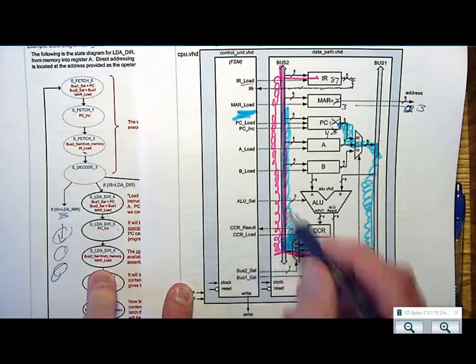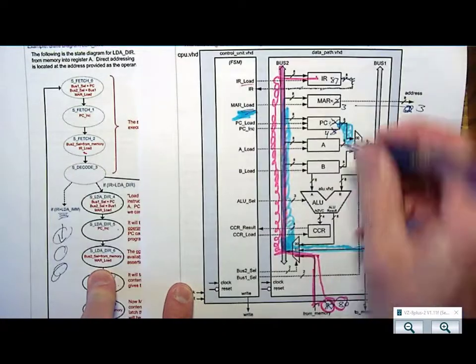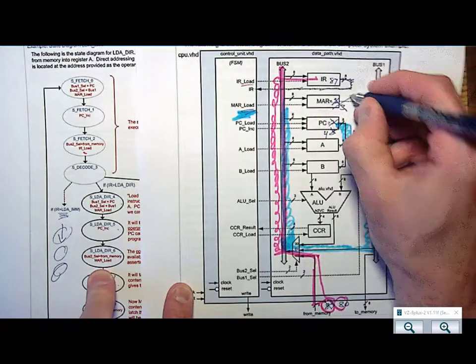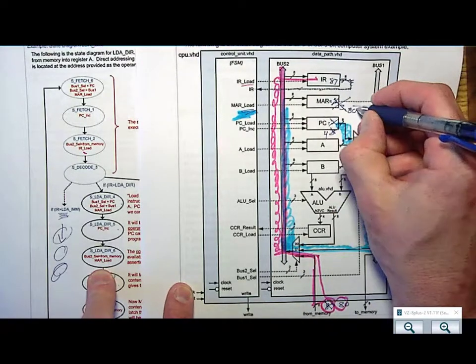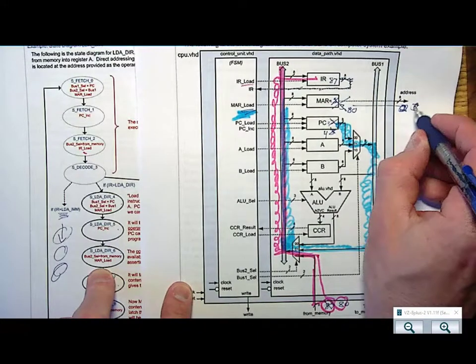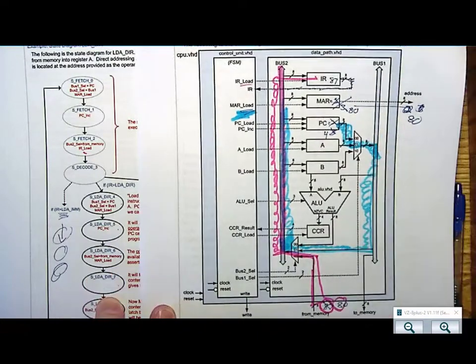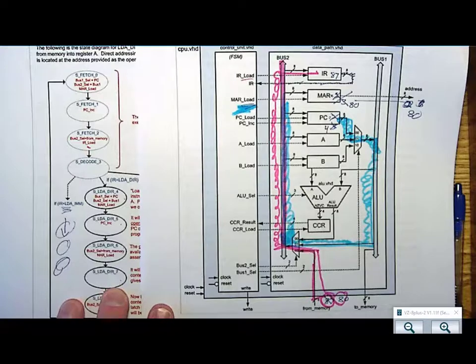The memory address register. I am actually going to put this into the MAR. So now MAR doesn't become the next address location in program memory. It actually becomes 80. 80 now is what goes out on the address bus, and I need a state just to catch my breath.